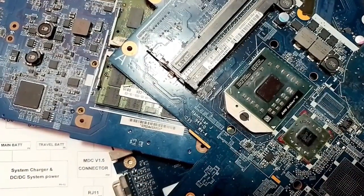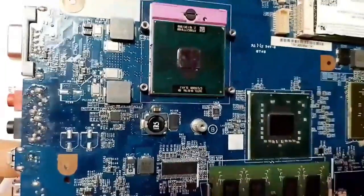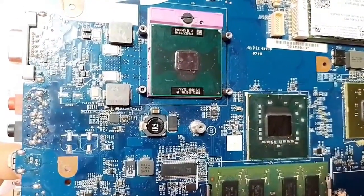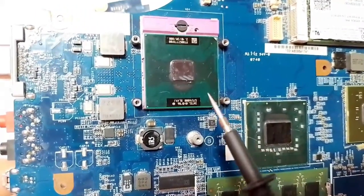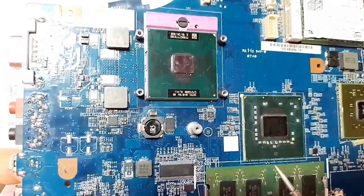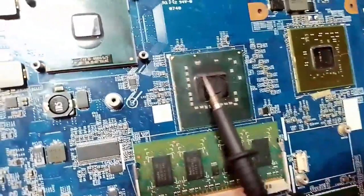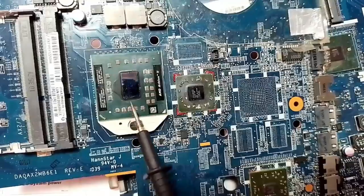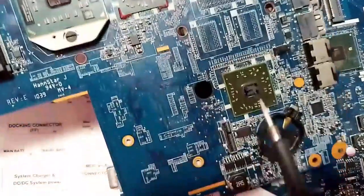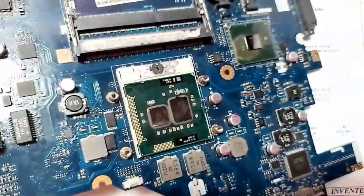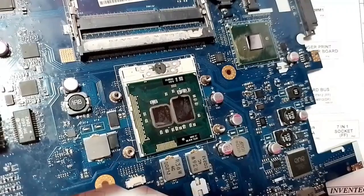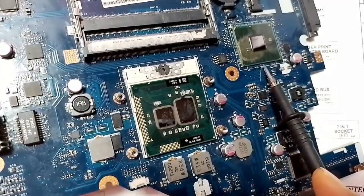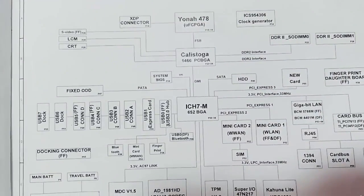These three motherboards are different from each other. This first motherboard contains four chipsets — one, two, three, and four. The second motherboard contains just three chipsets — one, two, and three. And this one contains just two chipsets — one and two.